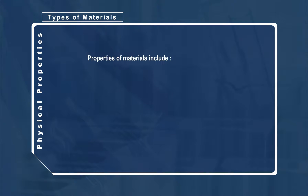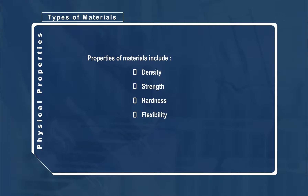Properties of materials include density, strength, hardness, flexibility, electrical conductivity, and heat conductivity.